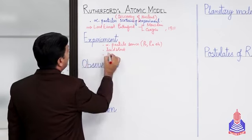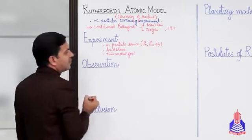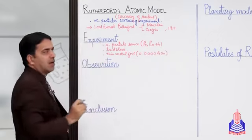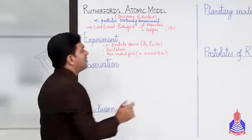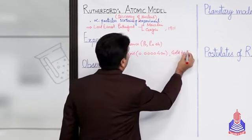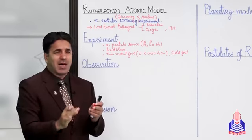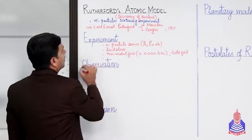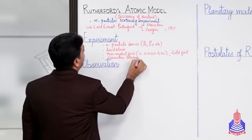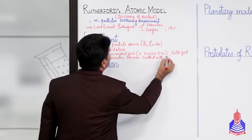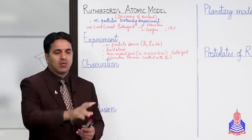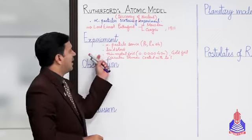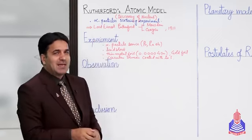ساتھ ہمیں thin metal foil چاہیے جس کی thickness point 000004 centimeter ہو۔ ہم gold foil استعمال کرتے ہیں، سونے کا انتہائی باریک ورق جس کی یہ مٹائی ہے۔ اور ایک circular screen چاہیے جو zinc sulfide (ZnS) سے coated ہو۔ جب alpha particles اس سے strike کرتے ہیں تو flash produce ہوتی ہے۔